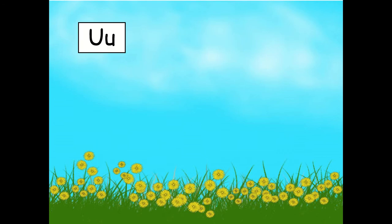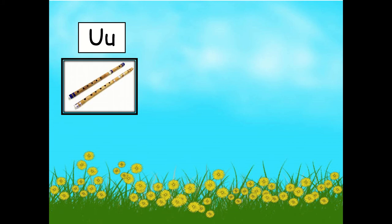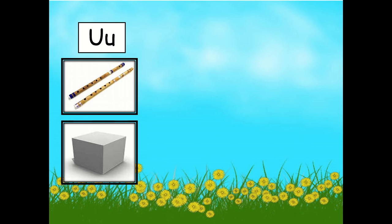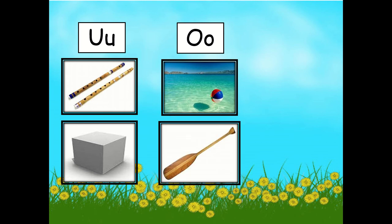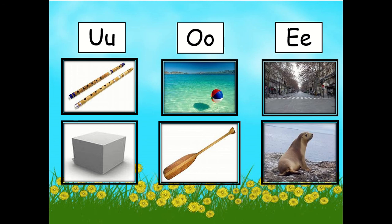The next letter is the letter U. For the letter U we have two sounds — it can be 'U' or 'U', for example in 'flute' and 'cube'. Next we have the letter O, and the long sound of the letter O is 'O', as in 'float'. And the last letter is the letter E, and the long sound of the letter E is 'E', for example 'street' and 'seal'.